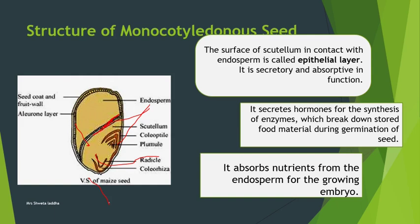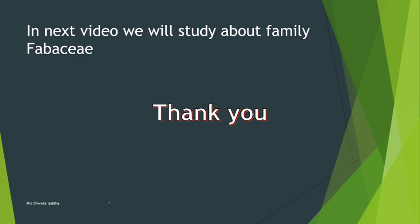To summarize the monocotyledonous seed: it is an endospermic seed having two parts - the upper, larger part is the endosperm covered by the aleurone layer rich in protein, and the lower shield-shaped part is the scutellum containing the plumule surrounded by the coleoptile and the radicle surrounded by the coleorhiza. I hope you have understood the structure of both the dicot seed and monocot seed, endospermic seeds also called albuminous seeds, and non-endospermic seeds also called ex-albuminous seeds.